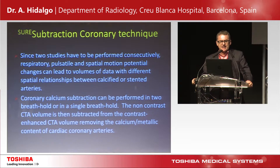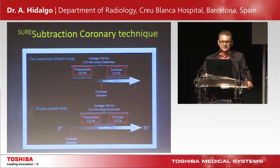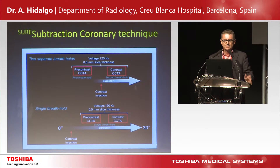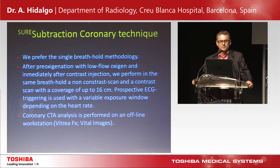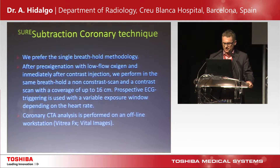There are two protocols: a single breath-hold or a two breath-hold protocol. The non-contrast CTA volume is subtracted from the contrast-enhanced CTA to remove calcified lesions and the metallic part of the stent. You can see the two protocols here — the two separate breath-holds and the single breath-hold — but we prefer the single breath-hold protocol. After pre-oxygenation, we perform a regular scan without contrast and then make the acquisition with contrast, and finally we work with the images at the workstation.